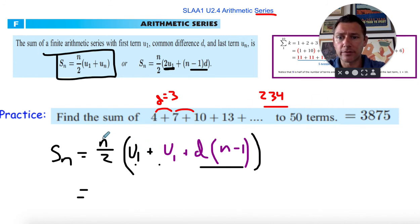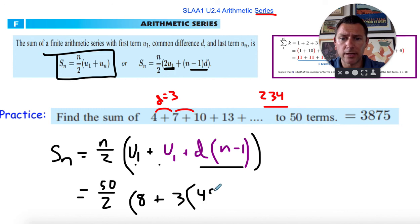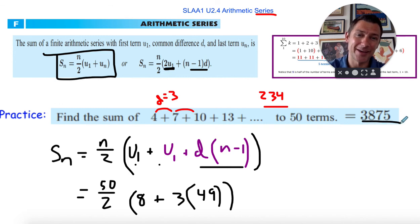So let's just use it and see how it would work. I know I've got 50 terms, so I've got 50 over 2, so this would be 50 over 2, 25 packets. I've got two sets of U1, one there, one there, so 4 and 4, so 8. The D value is 3, and N minus 1 is 50 minus 1 is 49. And then you just grab a calculator and start crunching. Spoiler alert, 3875.